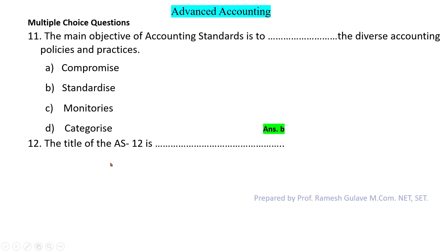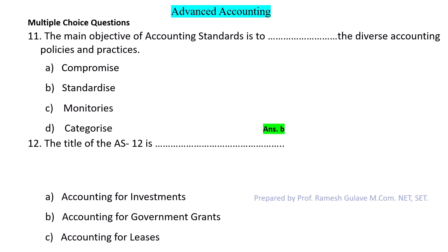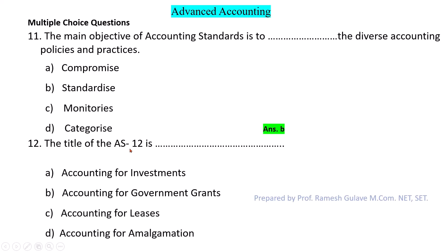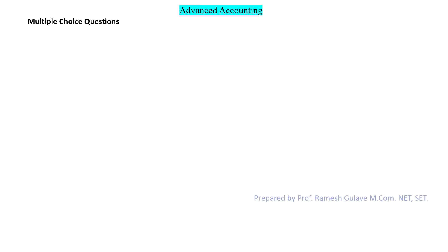Next question: What is the title of Accounting Standard 12? AS12 is related to accounting for government grants. So option B is the right answer.